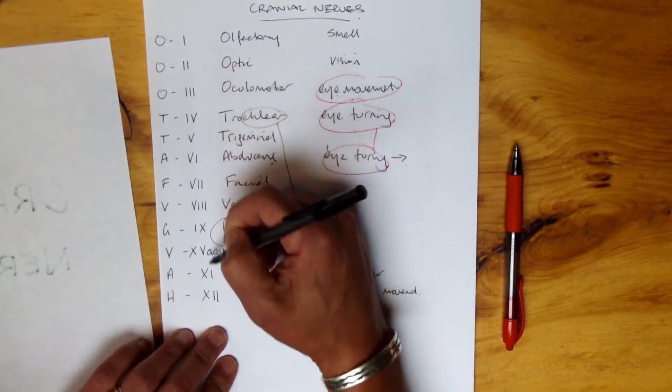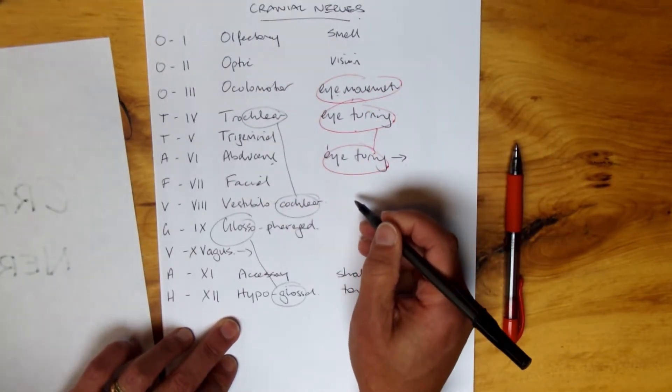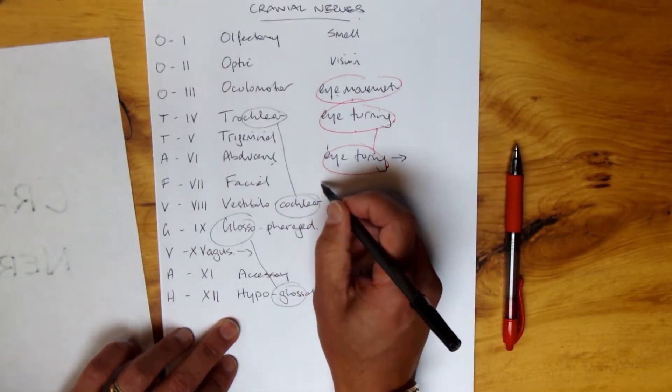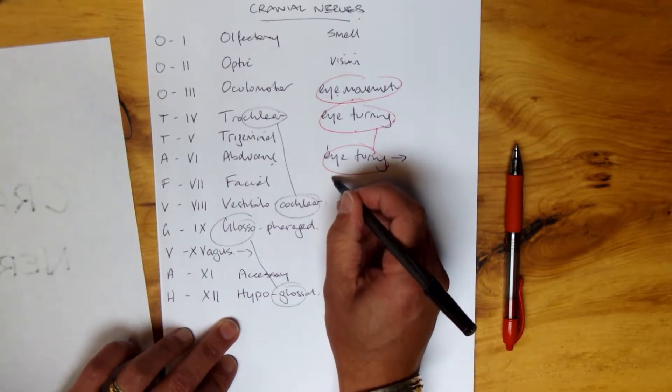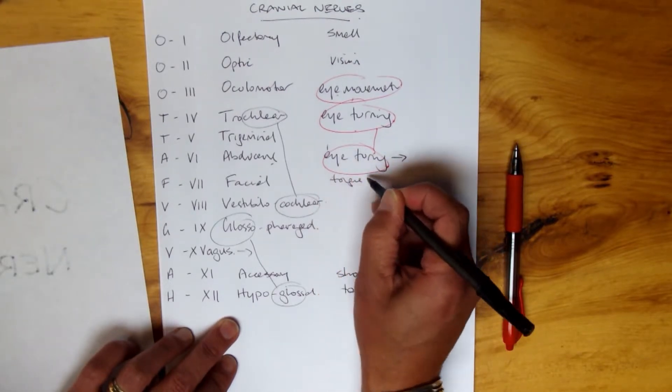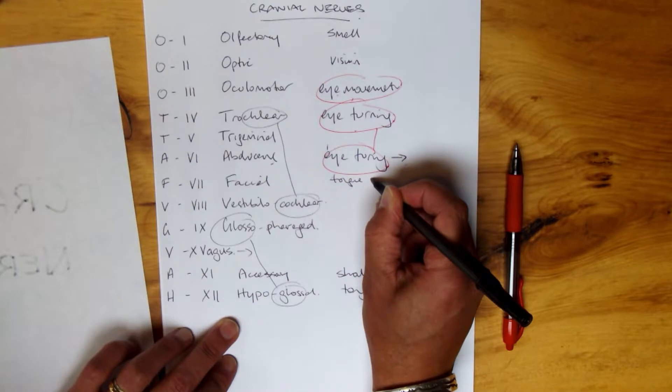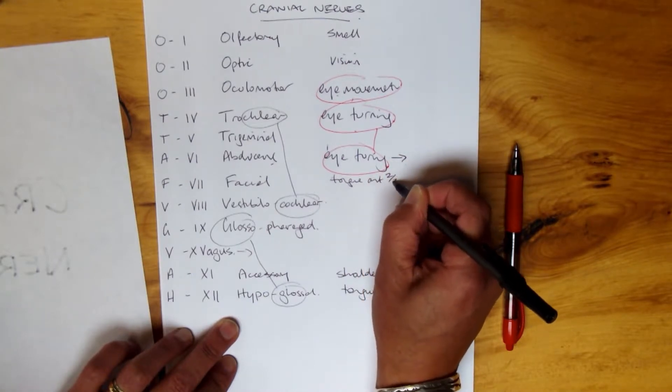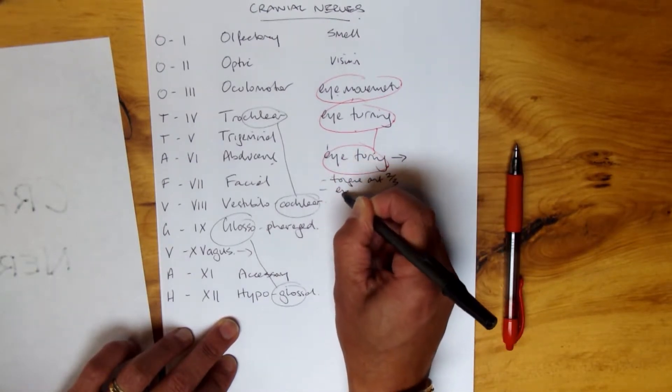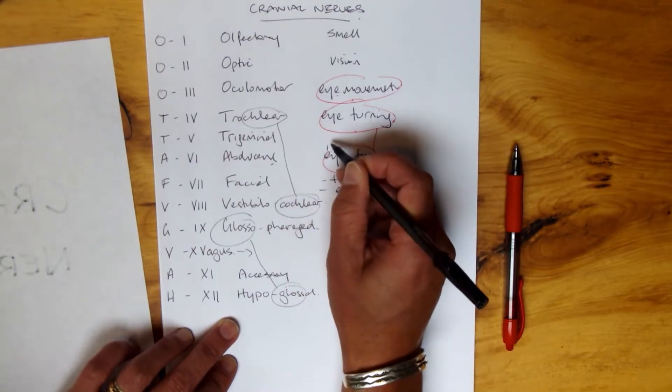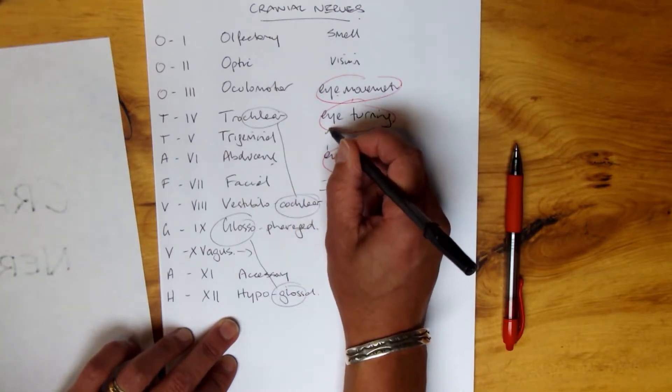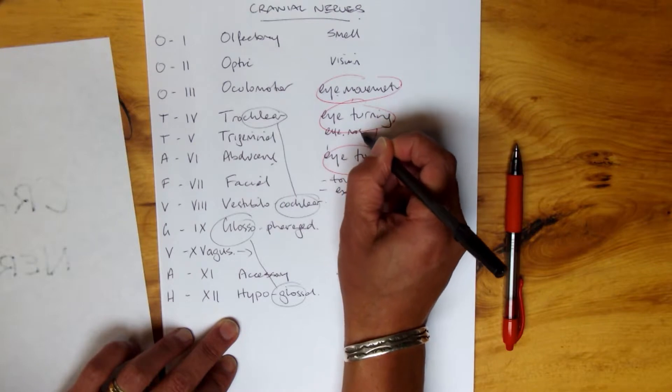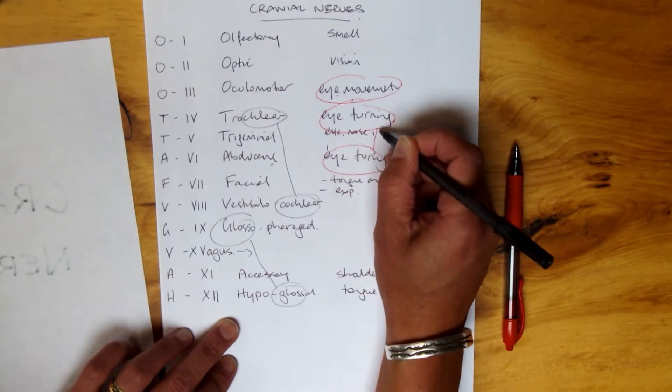Now we have the names, the numbers. I'm just filling in the rest of the functions related. So facial, the most important thing to remember here is the tongue, and it is, remember that it's the anterior two-thirds, and also facial expression.